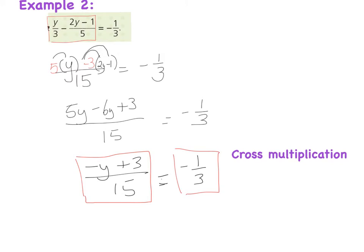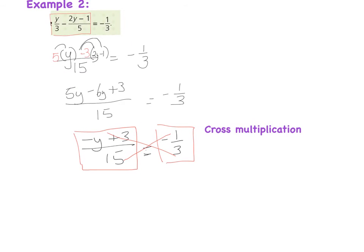Cross multiplication lets us remove fractions very easily. We multiply (minus y + 3) by the 3 on the right, and set that equal to minus 1 multiplied by 15. So we write: 3 times (minus y + 3) equals minus 1 times 15.